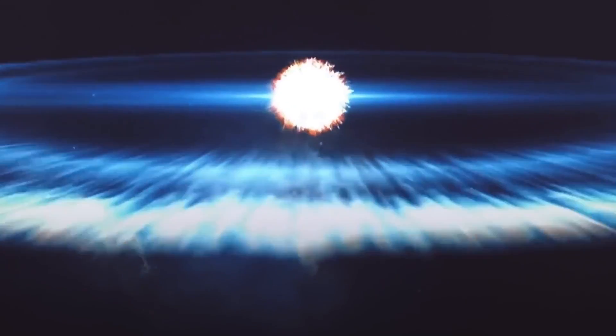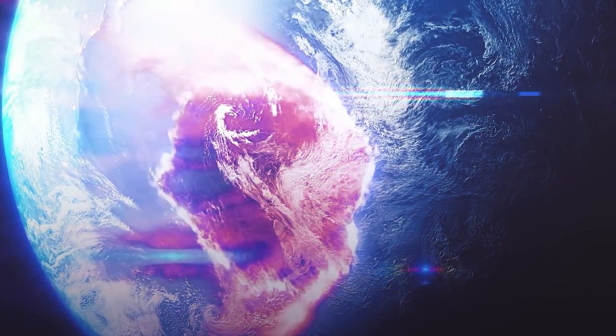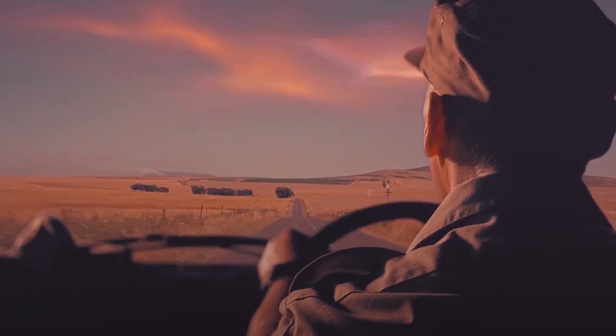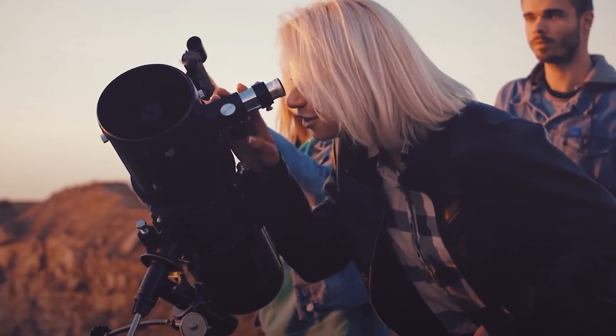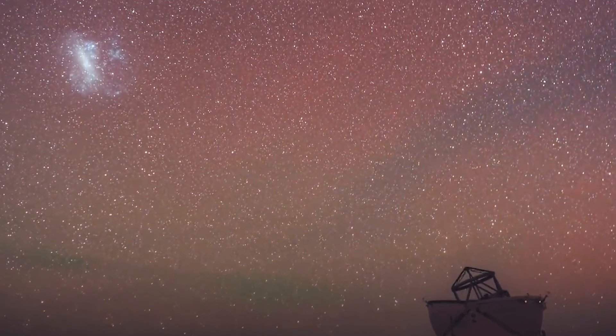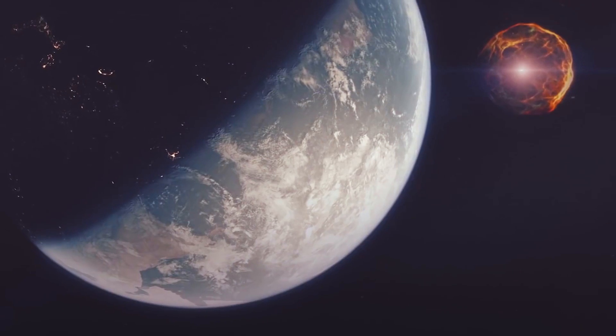A typical supernova can produce a light so bright that it could outshine its entire galaxy. While witnessing such a space phenomenon is rare, new data from scientists has revealed that a massive supernova is set to happen in our galaxy within the next 100 years.